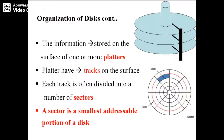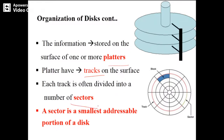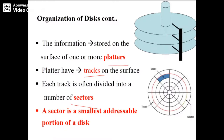The information is stored on the surface of one or more platters. Platters have tracks on the surface, and each track is divided into a number of sectors. A sector is the smallest addressable portion of the disk — that is what we have on one single platter.